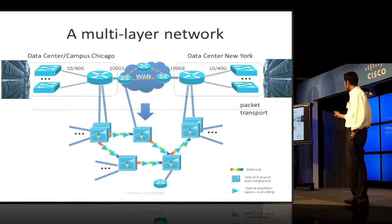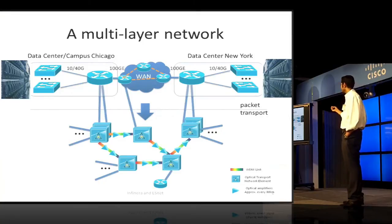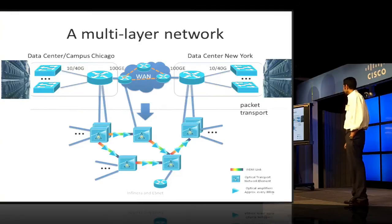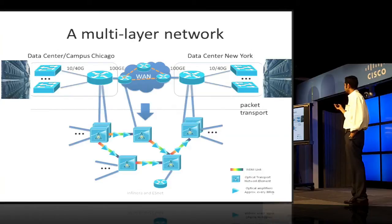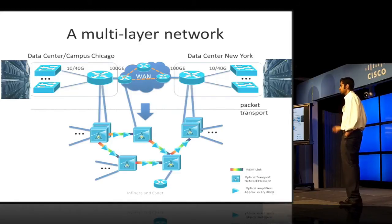If you zoom in a little bit at what this WAN comprises of, you actually have a multitude of things going on. You have some transport network elements present which are doing high-speed digital wrapping and transport of these client signals. You have packet traffic at various levels of aggregation, all getting muxed into optical or digital wrappers and then transported over long haul — thousands of kilometers.